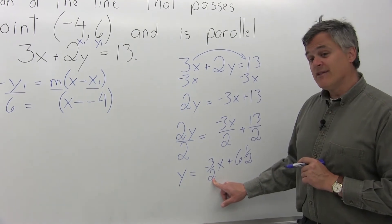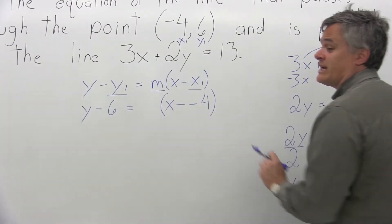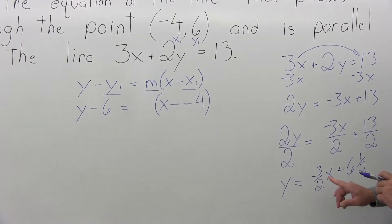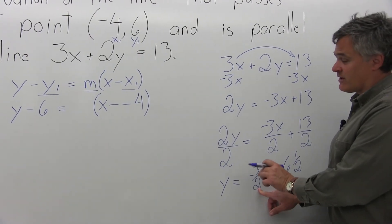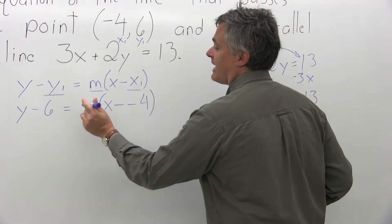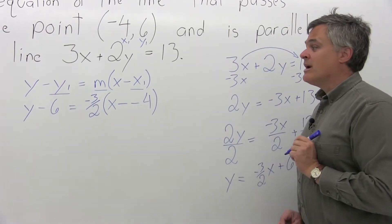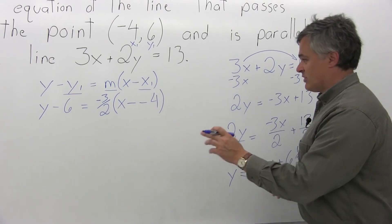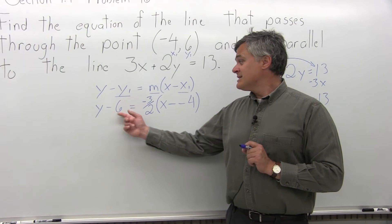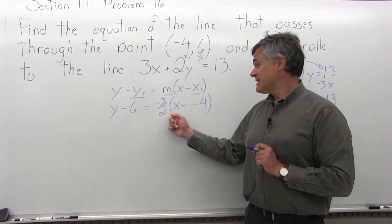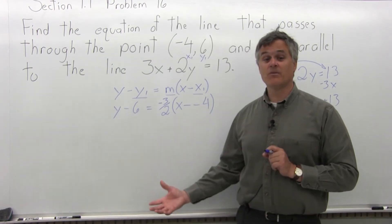The line we're trying to find is parallel, so it has the same slope. The given line has a slope of negative 3 halves, so the line we're trying to find must also have slope negative 3 halves. Where I fill in for m, I put in negative 3 halves. So the answer is y minus 6 equals negative 3 halves times x minus negative 4, but it's not in the best form yet.